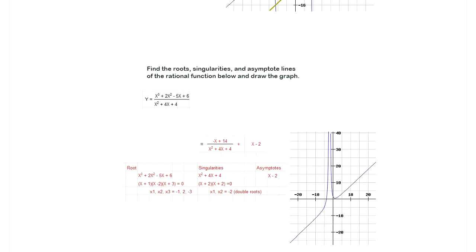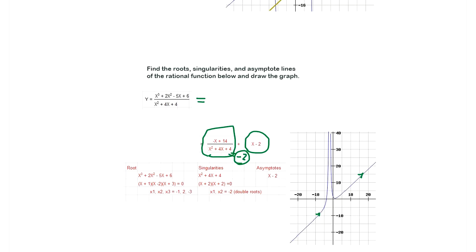Find the roots, singularity, and asymptote lines of the rational function below and draw the graph. This converts to proper form, and there is only one singular point at negative 2. Other than that it's pretty straightforward — the graph has a very peculiar shape.